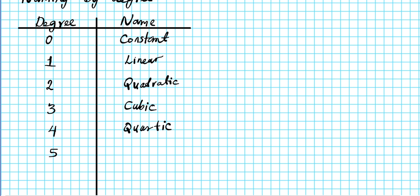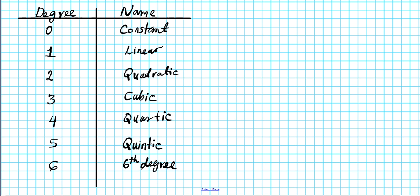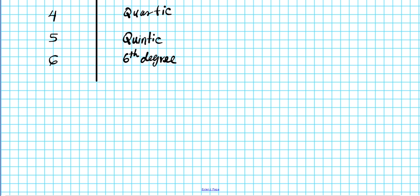A fifth degree polynomial is called a quintic. For algebra 2 and most pre-calc courses, those are the unique names assigned to polynomials by degree. After that, you use the ordinal position of the degree — for example, a degree of six is called a sixth degree polynomial. For degree n, you simply call it an nth degree polynomial.